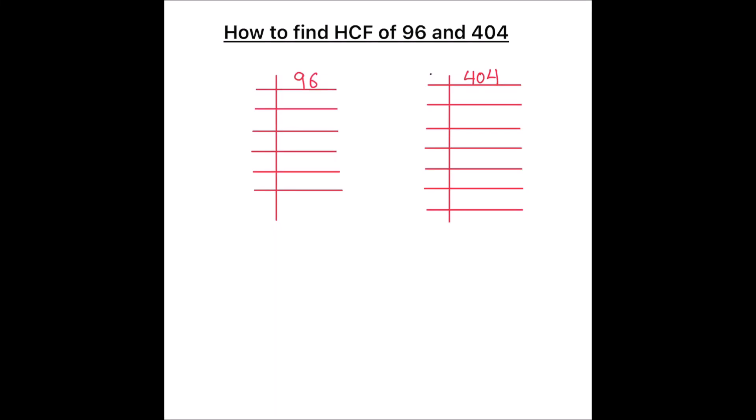Hello students. In this video we are going to learn how to find the HCF of 96 and 404. For finding the HCF, we will be using the prime factorization method. In this method, we divide numbers by prime numbers and find the factors of the numbers. And after finding the factors, we find the HCF by taking the common factors between the two numbers.